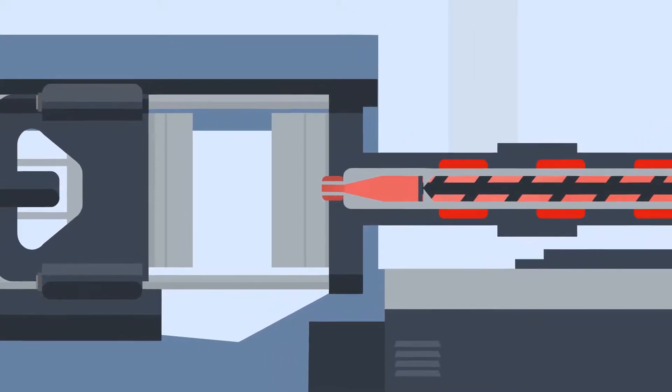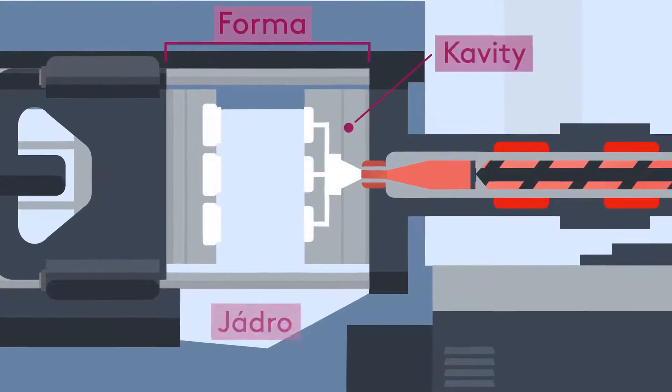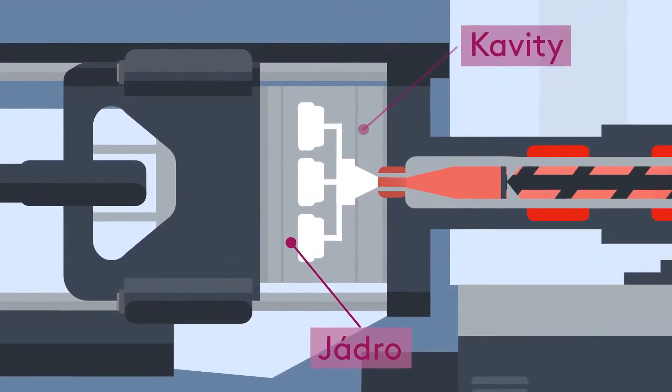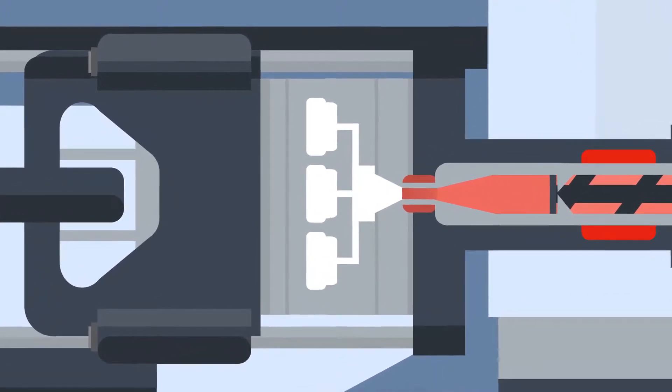Before the molten plastic is injected, the tool, which is usually made up of a fixed half called the cavity and a moving half called the core, closes. When closed, the clamp will apply pressure to the tool, ready for the injection of the plastic.